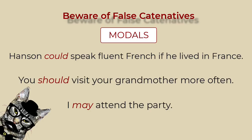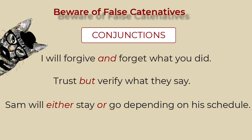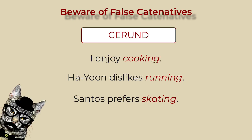Some of these are modal verbs. Modal verbs are not examples of catenation. Also, auxiliary verbs with participles. Using conjunctions like 'and,' 'but,' or 'or.' An infinitive of purpose, which is really an adverbial phrase. And the gerund as a verbal noun.